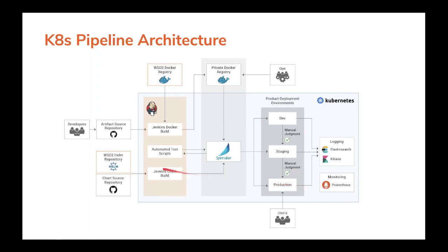There are two GitHub repositories that act as the source of truth for the deployments. The artifact source repository contains the Docker file which can be used to customize the base images from WSO2 and add or build artifacts for deployment. The chart source repository contains overrides for the Helm chart configuration. There is also a private Docker registry to store the customized images.